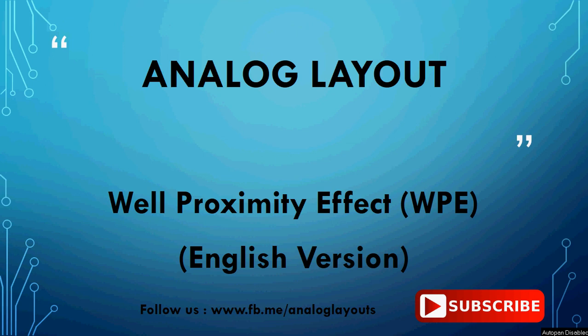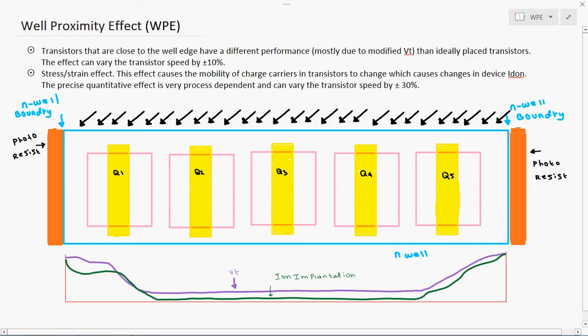Welcome to Unlock Layouts. In this video, we are going to discuss the topic of well proximity effects. Well proximity effect is a second order effect — meaning we get these kinds of problems after or during the manufacturing process. That is why it is called a second order effect.